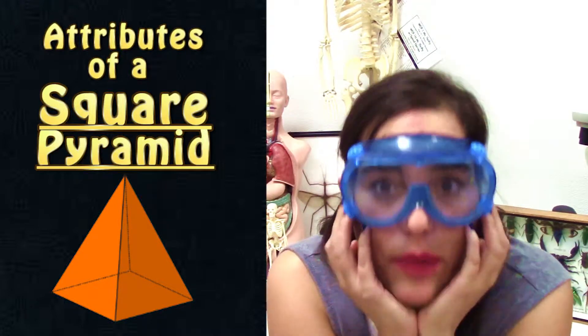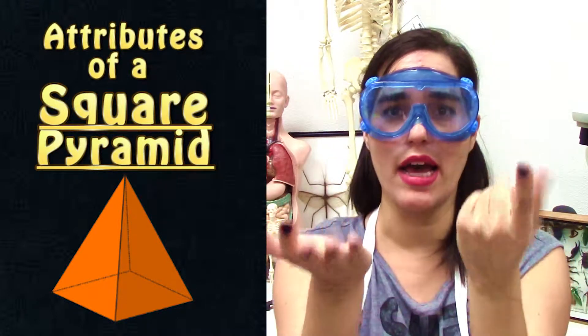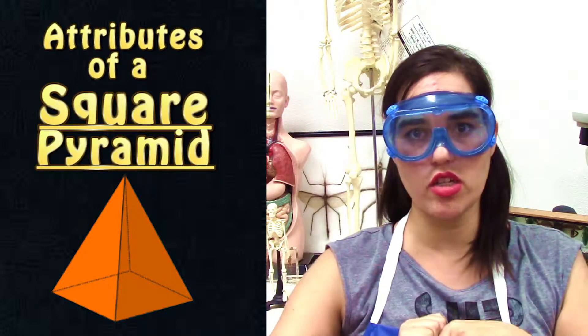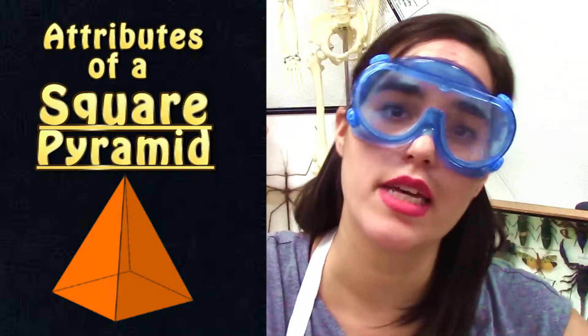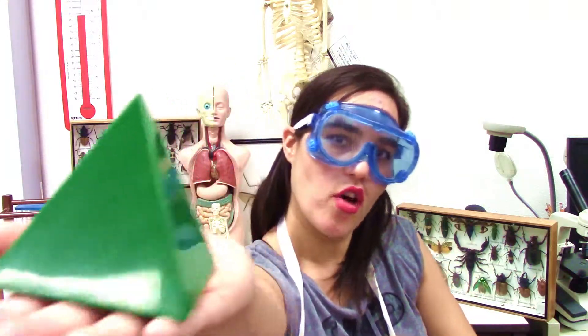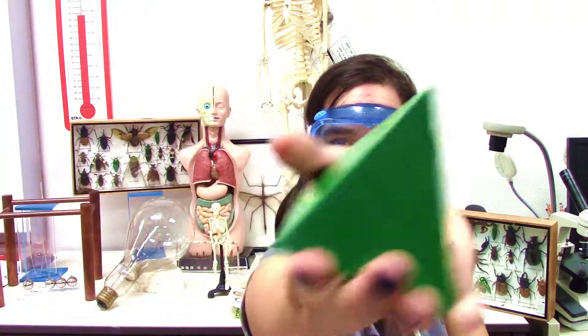Guys, I'm getting a little bit sad. Why? Because I only have two more shapes to teach you: square pyramid and the cube. Here I introduce you the square pyramid. How do I know that is a pyramid?